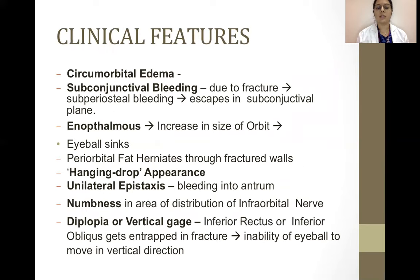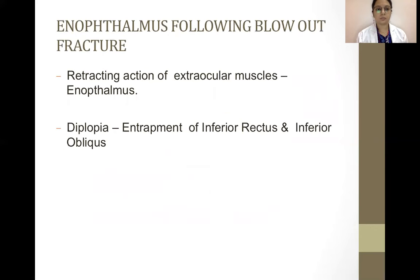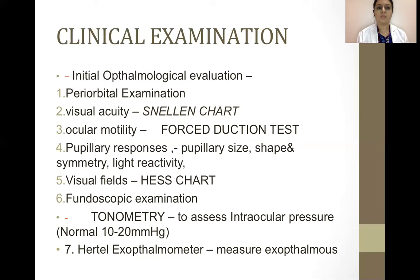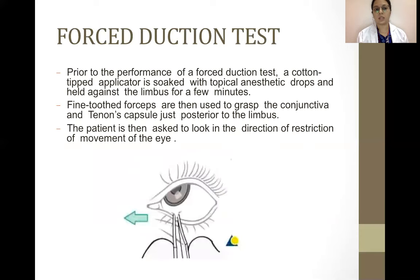Clinical features of blowout fractures include circumorbital edema, subconjunctival bleeding, enophthalmus, eyeball sinking, hanging drop appearance, unilateral epistaxis, numbness, diplopia, and vertical gaze restriction. Enophthalmus following blowout fracture results from the retracting action of the extraocular muscles and entrapment of the inferior rectus and inferior oblique. Blow-in fractures show fragmented bones of the orbital floor displaced into the orbit, causing proptosis or exophthalmus, more commonly seen in fractures of the orbital roof. Clinical examination includes initial ophthalmological evaluation, periorbital examination, visual acuity using the Snellen's chart, ocular motility using the forced-duction test, pupillary responses, visual fields using the Hess chart, fundoscopy, tonometry, and Hertel exophthalmometer. The forced-duction test uses a cotton-tipped applicator with topical anesthetic held against the limbus, then fine-toothed forceps grasp the conjunctiva and Tenon's capsule just posterior to the limbus; the patient is asked to look in the direction of restricted movement.